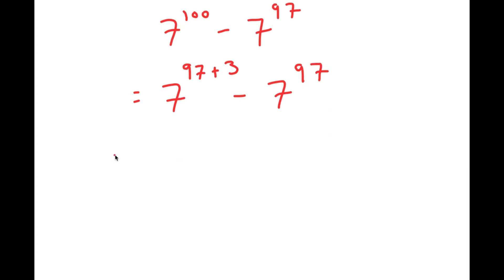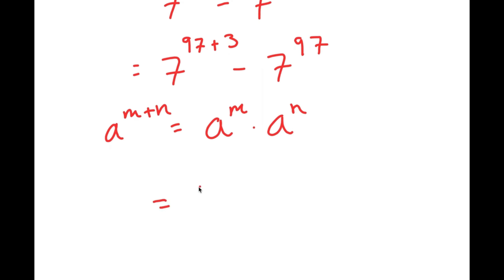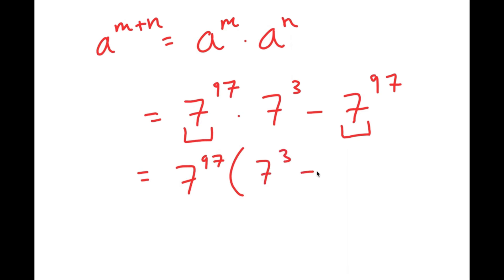If I have something in the form a to the power of m plus n, this is equal to a to the power of m times a to the power of n. So 7 to the power of 97 plus 3 is going to equal 7 to the power of 97 times 7 to the power of 3, minus 7 to the power of 97. Notice how both of my terms have 7 to the power of 97 in them, so I can simply factor out 7 to the power of 97, and I get 7 to the power of 97 times 7 to the power of 3 minus 1.